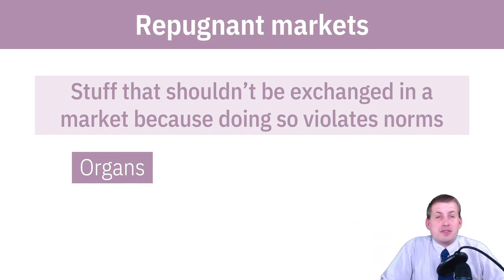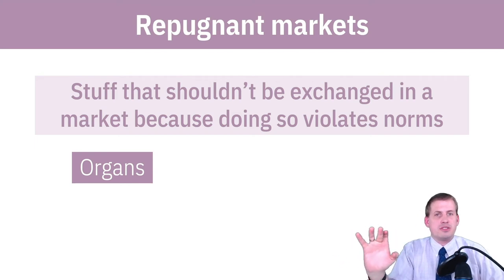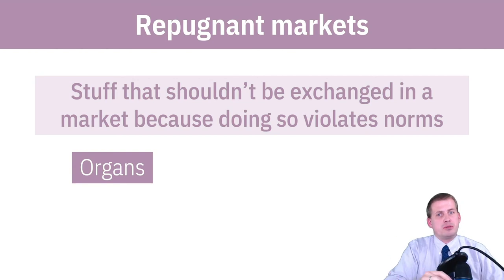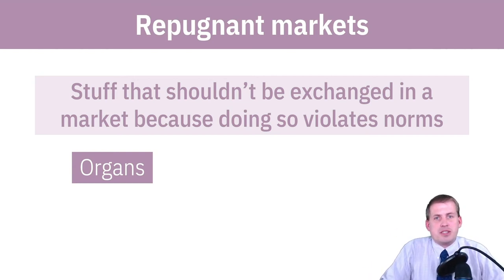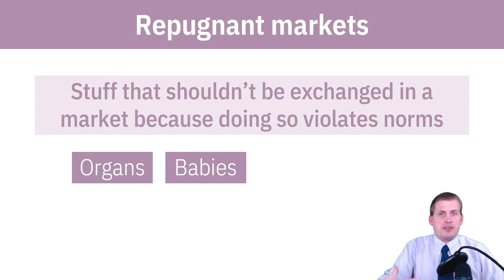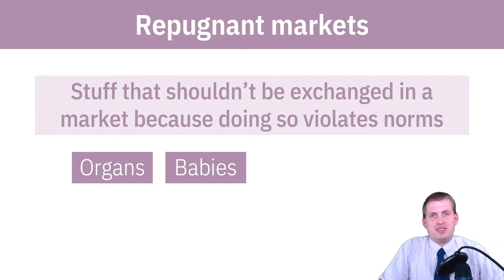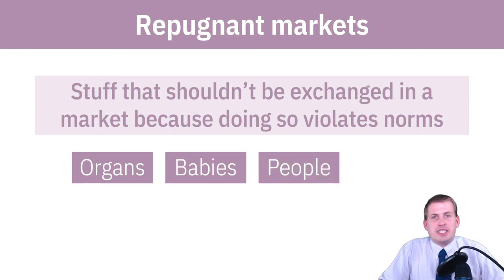We've collectively decided that a market for organs is bad. Economists have figured out other ways of distributing organs — a few years ago the Nobel Prize in Economics was awarded to someone whose life's work was figuring out how to deal with strange markets like organ markets or the market for medical residencies. He helped design a system to match residents with appropriate hospitals. Similarly, we don't have a market for babies — adoption agencies have fees, and when different prices are charged based on where babies come from, it enters repugnant territory and feels wrong.